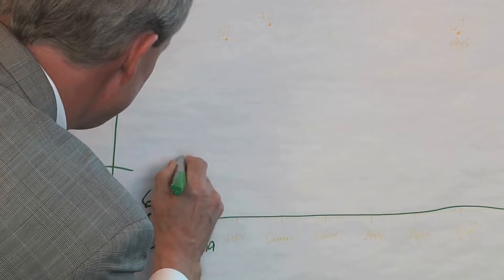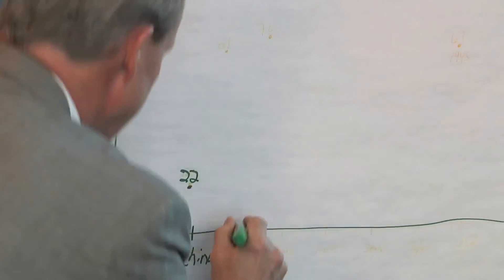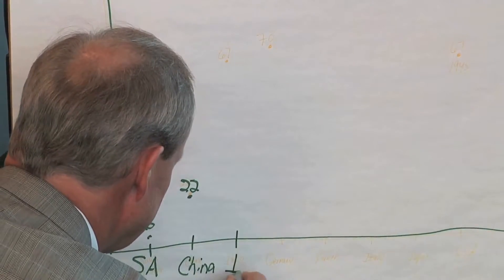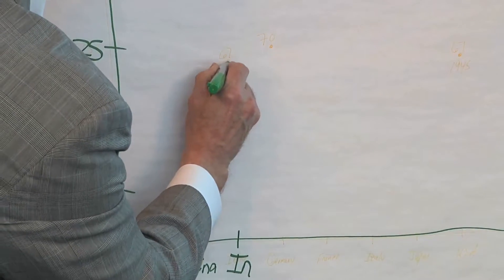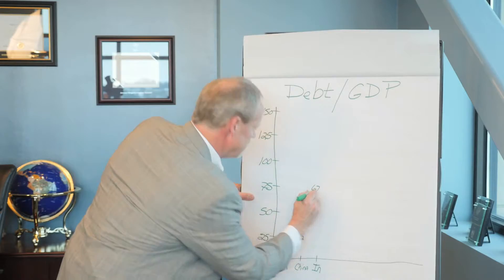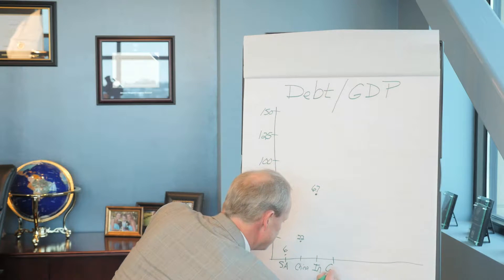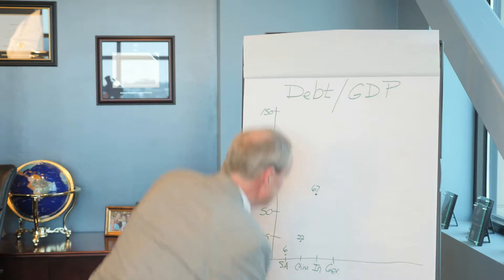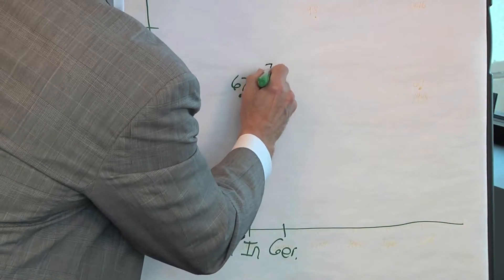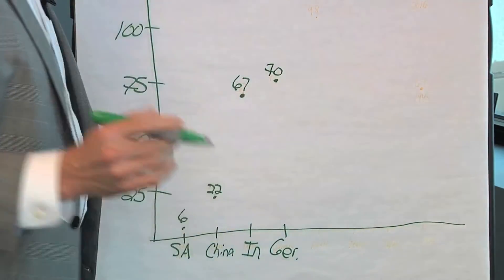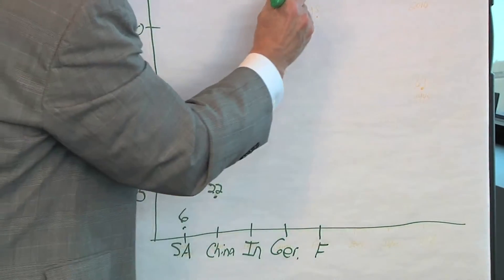India's debt to GDP is at 67%. Germany's debt to GDP, very similar to India, is at 70%. France's debt to GDP is at 98%.